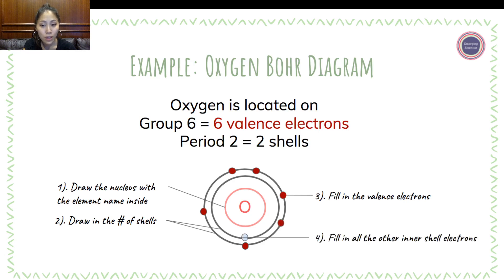Lastly, fill in all the other inner shell electrons. So we do know that there's only two shells, and the first shell can only contain a maximum of two electrons. Again, you can't open up to the next shell if the inner shell has not been filled. So the assumption is starting with the valence electrons, which may or may not be a full shell, every shell that's inside of it must be a full shell.